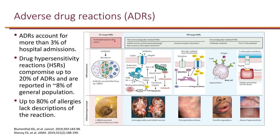On-target adverse drug reactions are reactions essentially based on the mechanism of action of the drug — these are things we actually anticipate. An obvious example is antibiotics: they are intended to kill microorganisms, but we don't want them to touch the microbiome. Pretty much most antibiotics are associated with C. diff infections, and that is an on-target adverse drug reaction.